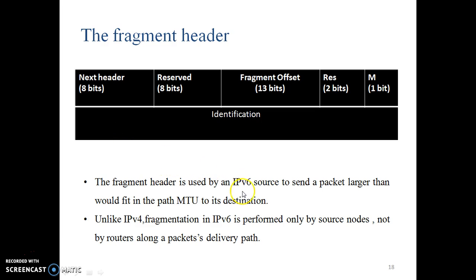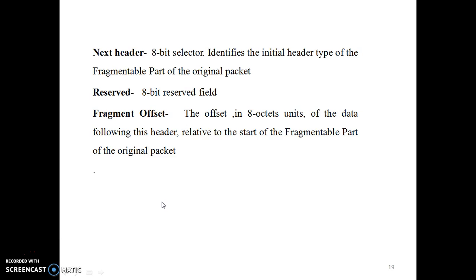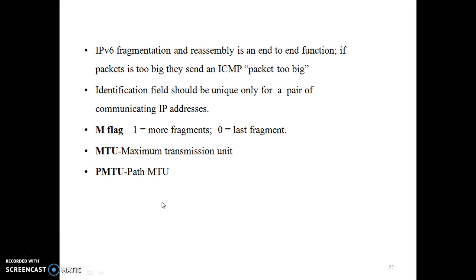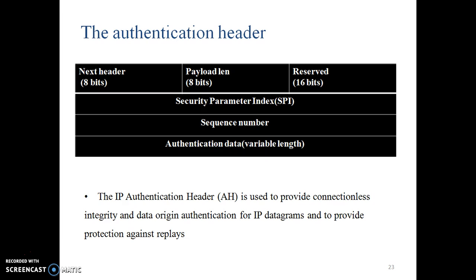The fragment header is used by an IPv6 source to send a packet larger than would fit in the path to its destination. The authentication header is used to provide connectionless integrity and data origin authentication for IP datagrams, and to provide protection against replay attacks.